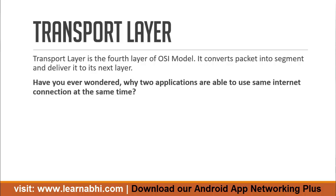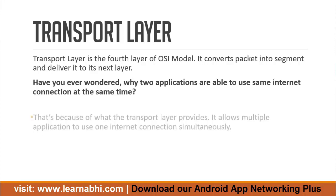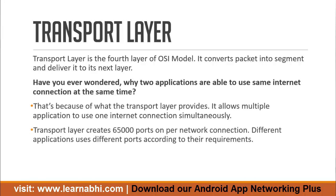Have you ever wondered why two applications are able to use the same internet connection at the same time? That is because of what the transport layer provides — it allows multiple applications to use one internet connection simultaneously. The transport layer creates 65,000 ports per network connection, and different applications use different ports according to their requirement.